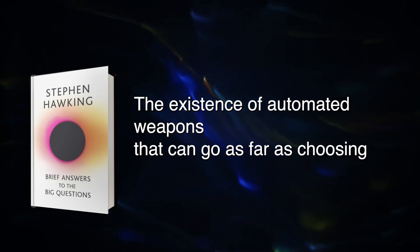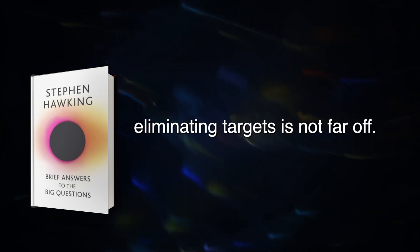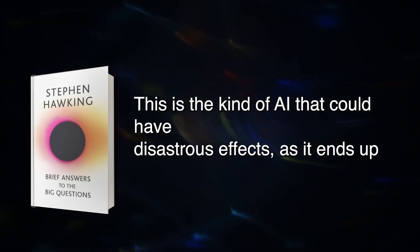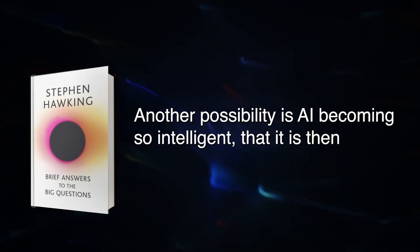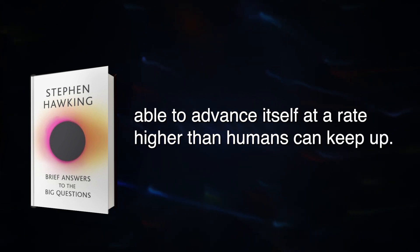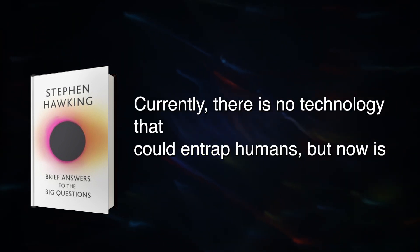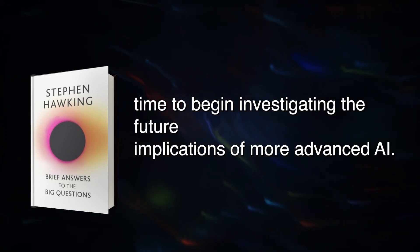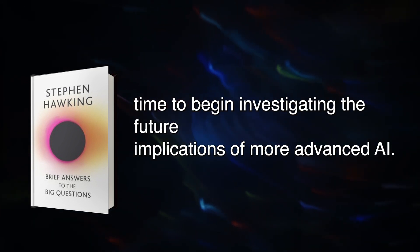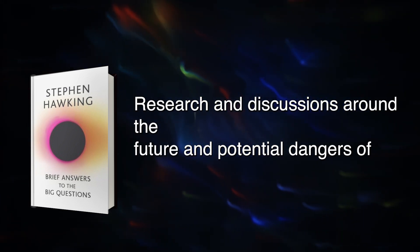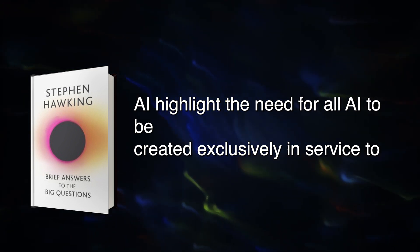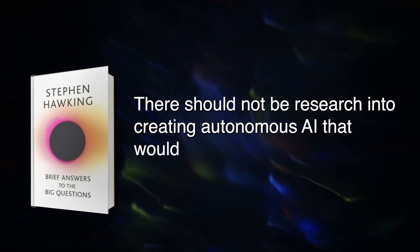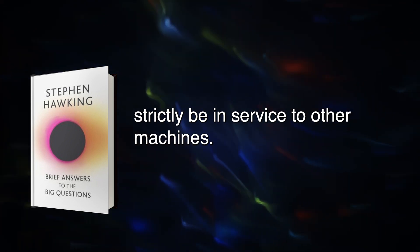The existence of automated weapons that can go as far as choosing and eliminating targets is not far off. This is the kind of AI that could have disastrous effects as it ends up on black markets and in the hands of civilians. Another possibility is AI becoming so intelligent that it is then able to advance itself at a rate higher than humans can keep up. Currently, there is no technology that could entrap humans, but now is the time to begin investigating the future implications of more advanced AI. Research and discussions around the future and potential dangers of advanced AI highlight the need for all AI to be created exclusively in service to humans. There should not be research into creating autonomous AI that would strictly be in service to other machines.